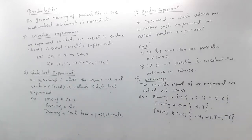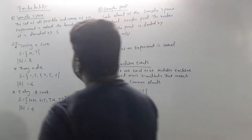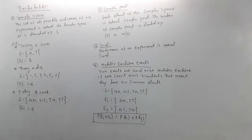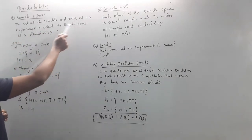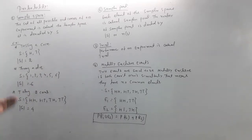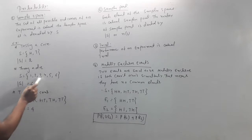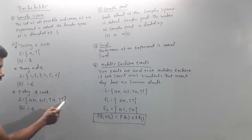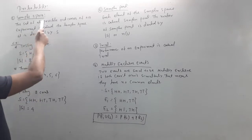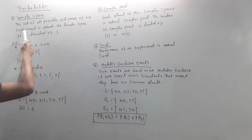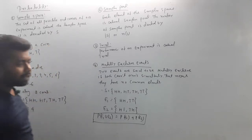The next term is sample space. The set of all possible outcomes of an experiment is called the sample space. For example, tossing a coin gives head or tail — two outcomes. Throwing a die gives 1, 2, 3, 4, 5, 6 — six outcomes. Tossing two coins gives HH, HT, TH, TT — four outcomes. The sample space is all possible outcomes and is denoted by S.